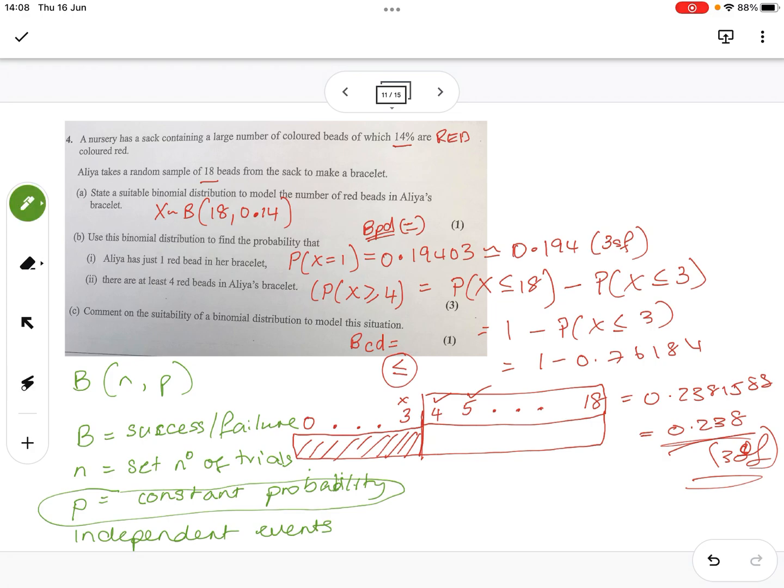It's only suitable if certain conditions are met. If the number of beads in the bag is small, then the probability will change. If the number of beads in the bag is large, then taking 18 out isn't going to make much difference to the probability. So it could be suitable, as it might not change the overall probability. That's the biggest issue you need to check. And that's it.